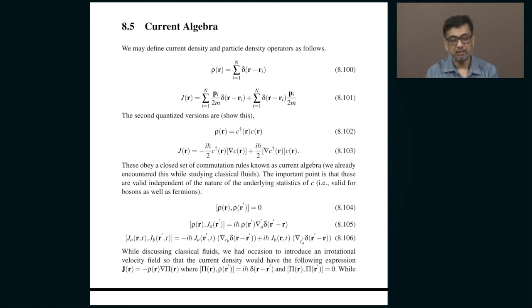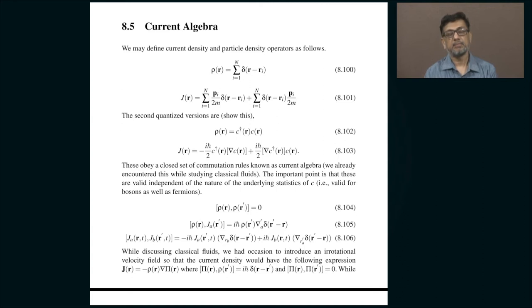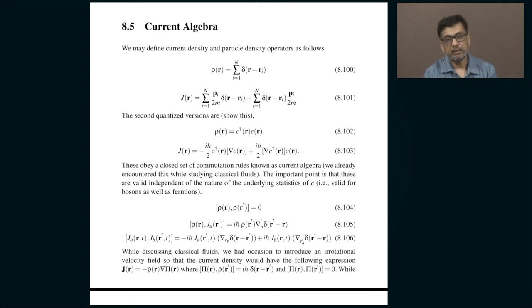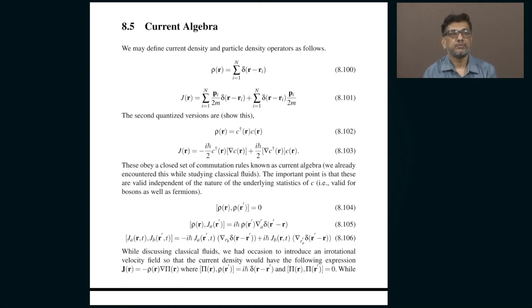Now I am going to digress and discuss some aspects which are somewhat technical. This course is meant to describe somewhat esoteric subjects like field theories, so you should not be surprised that I dwell on technical topics. The subject is current algebra. Recall that for fluids we encountered the idea that you can ignore the underlying graininess and express the equations of a fluid purely in terms of density and velocity distributions, where current is basically density times velocity.